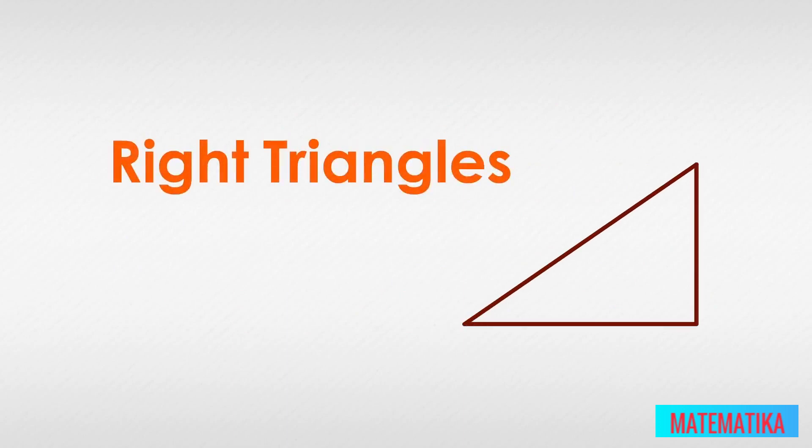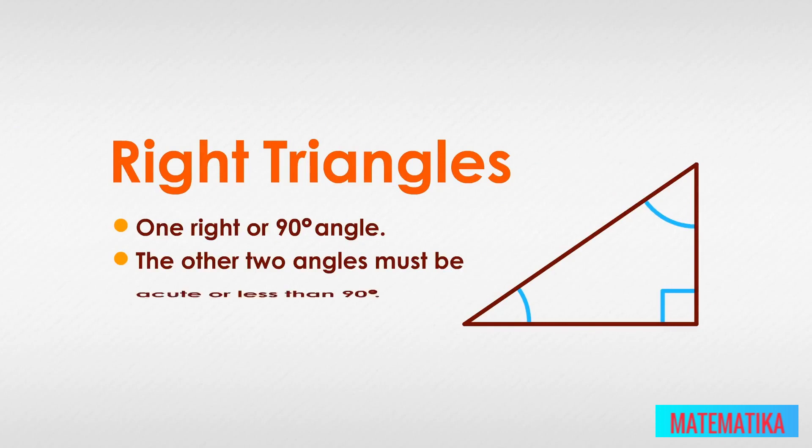Before we start, let's make sure we have a firm understanding of right triangles. A right triangle always has one right or 90-degree angle. This means the other two angles must be acute or less than 90 degrees.